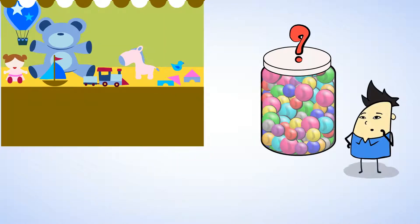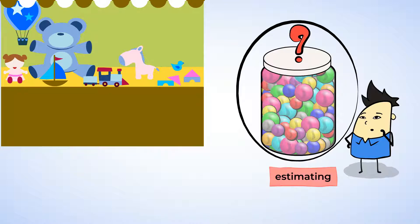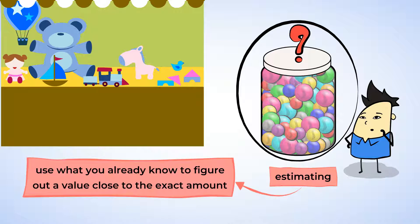You walk around all sides of the jar, count a few marbles in one section, and then use that number to make a guess about how many are in the whole jar. What you just did is called estimating. When you estimate, you use what you already know to figure out a value that is close to the exact amount.